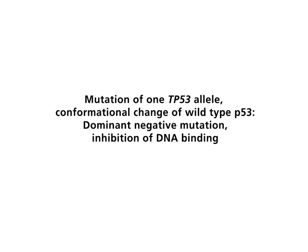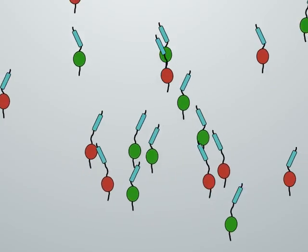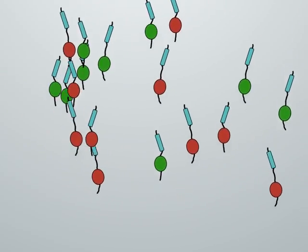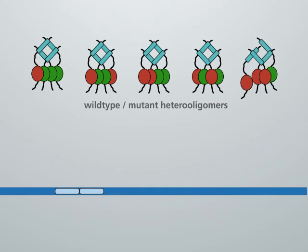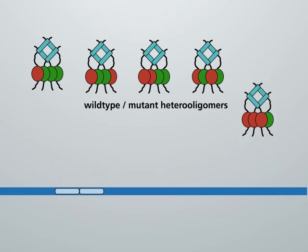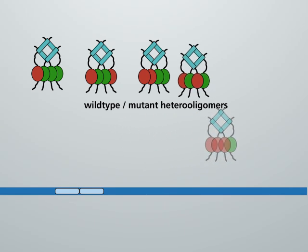Mutation of one TP53 allele. Conformational change of wild-type P53. Dominant negative mutation. Inhibition of DNA binding. In many tumors, one TP53 allele carries a point mutation, whereas the second allele is wild-type. When mutant P53 monomers associate with wild-type monomers, the wild-type monomers are forced into a different conformation. Binding to P53 DNA consensus sequences is blocked, and the respective genes are not transcribed.